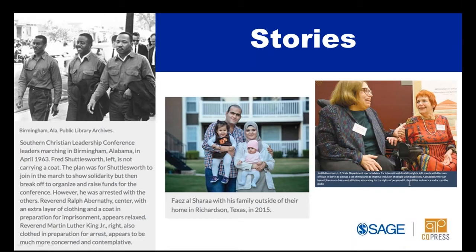Covering the struggle of African Americans to achieve civil rights in a chapter on civil rights makes perfect sense. But it doesn't make sense that that would be the only place where we'd hear stories of African Americans or others with similarly marginalized coverage in many texts. Through telling stories that highlight real people, you can provide a lens through which students can recognize themselves in the political process.